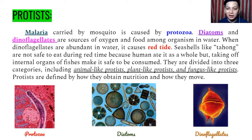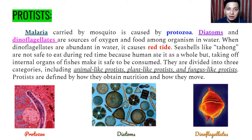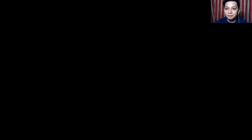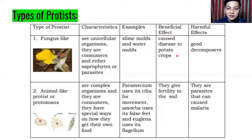Protists are defined by how they obtain nutrition and how they move. Fungus-like protists are unicellular organisms and are consumers — either saprophytes or parasites. Examples include slime molds and water molds. Note that their effects are sometimes listed in reverse: the beneficial effect is that they are good decomposers, while the harmful effect is that they cause disease to potato crops, leading to the death of potato plants.